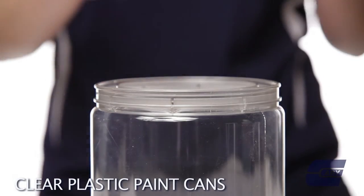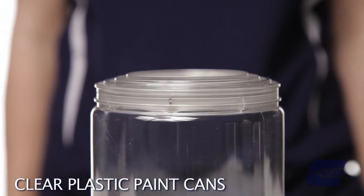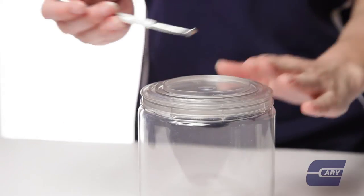The clear plastic paint cans have a friction fit top and can be snapped into place by hand. To remove the lid, you can use a regular paint can opener.